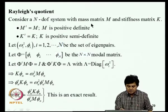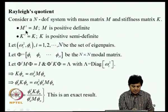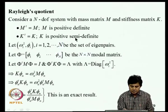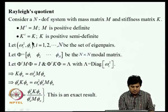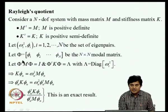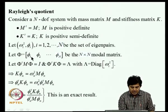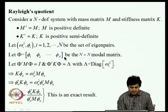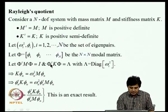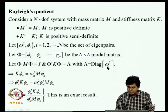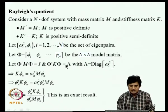Consider an N-degree-of-freedom system with mass matrix M (symmetric and positive definite) and stiffness matrix K (symmetric and positive semi-definite). We denote by omega_i and phi_i the ith eigenpair, obtained by solving the associated eigenvalue problem. The modal matrix phi is N×N with each column representing one eigenvector. The eigenvectors are mass-normalized so that phi^T * M * phi = I (identity), and phi^T * K * phi = diag(omega_i^2).